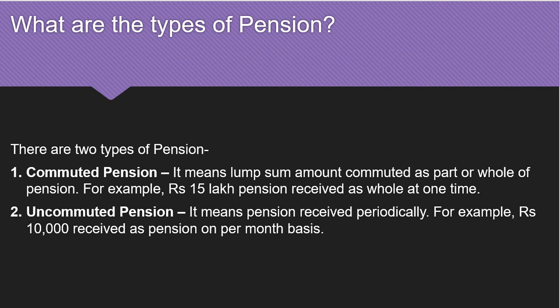Uncommuted pension means the pension is received on a per month basis — periodically. Every month, or every 3 months, or every 6 months.